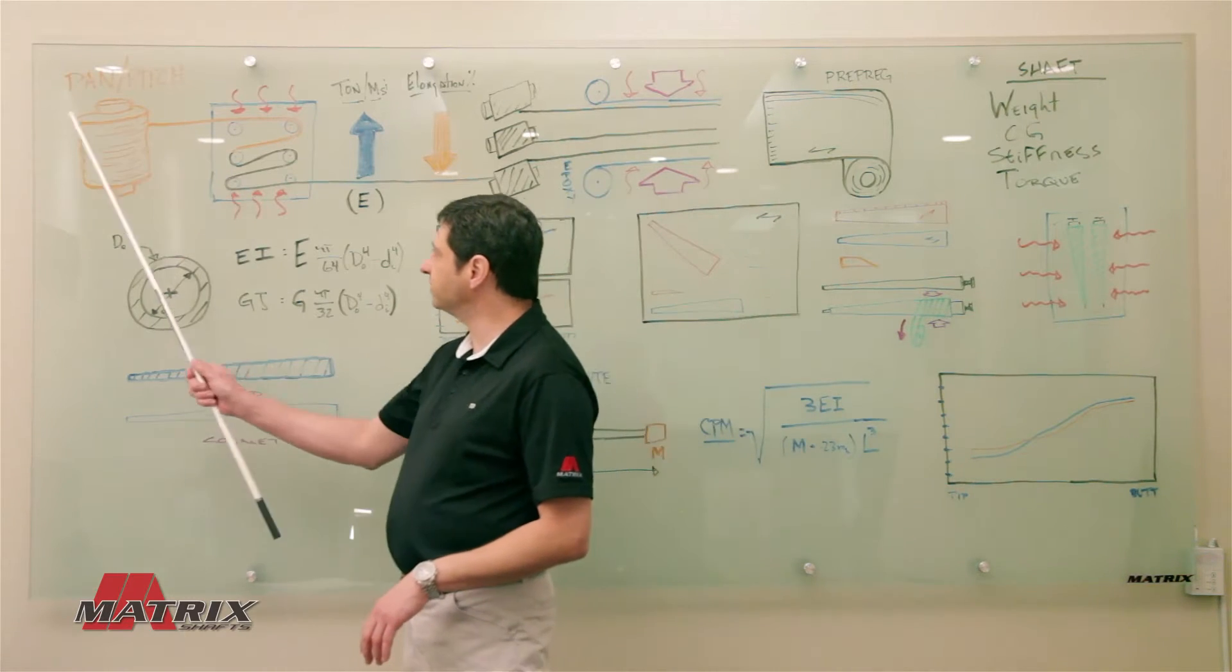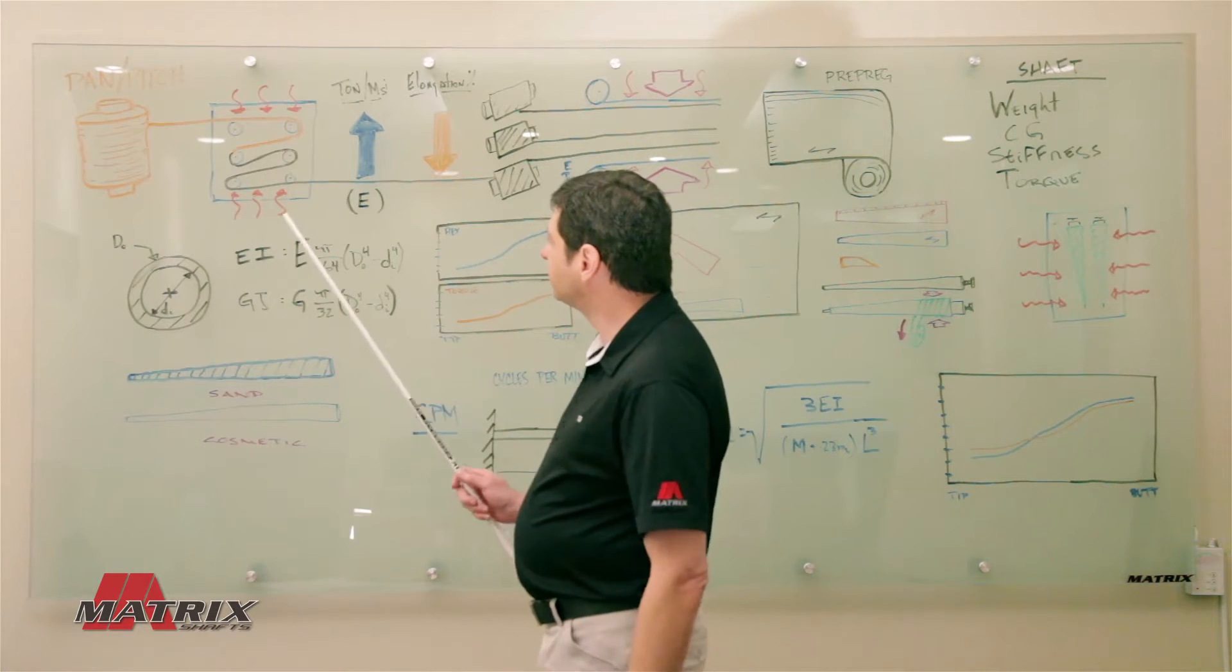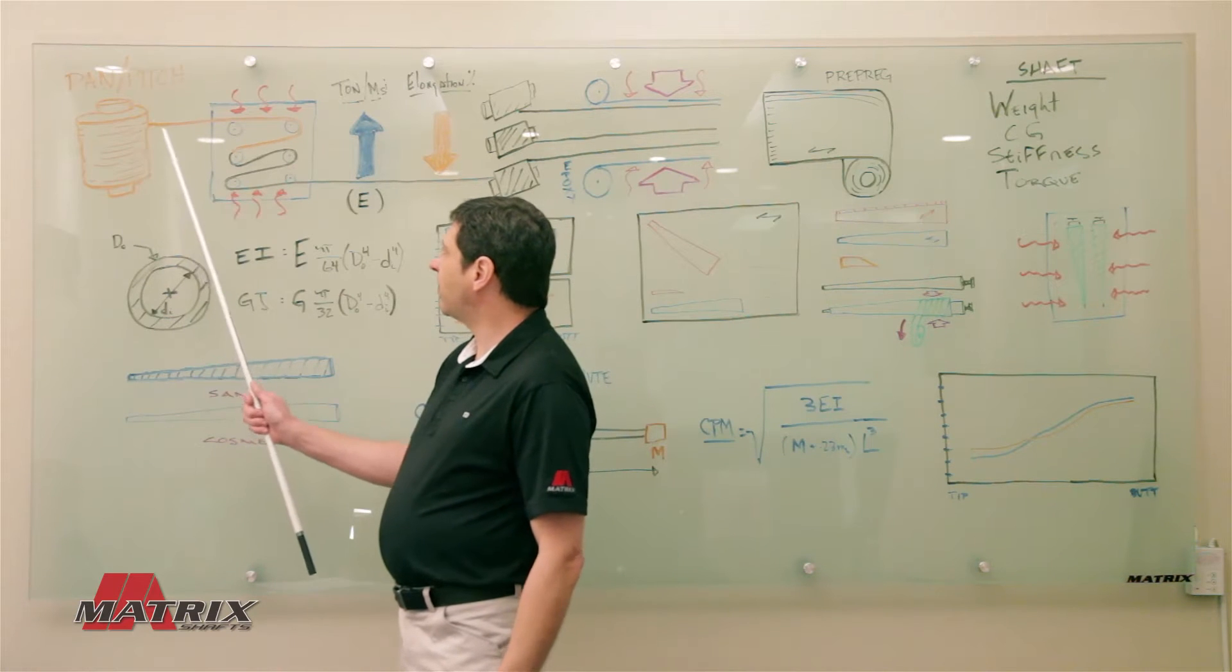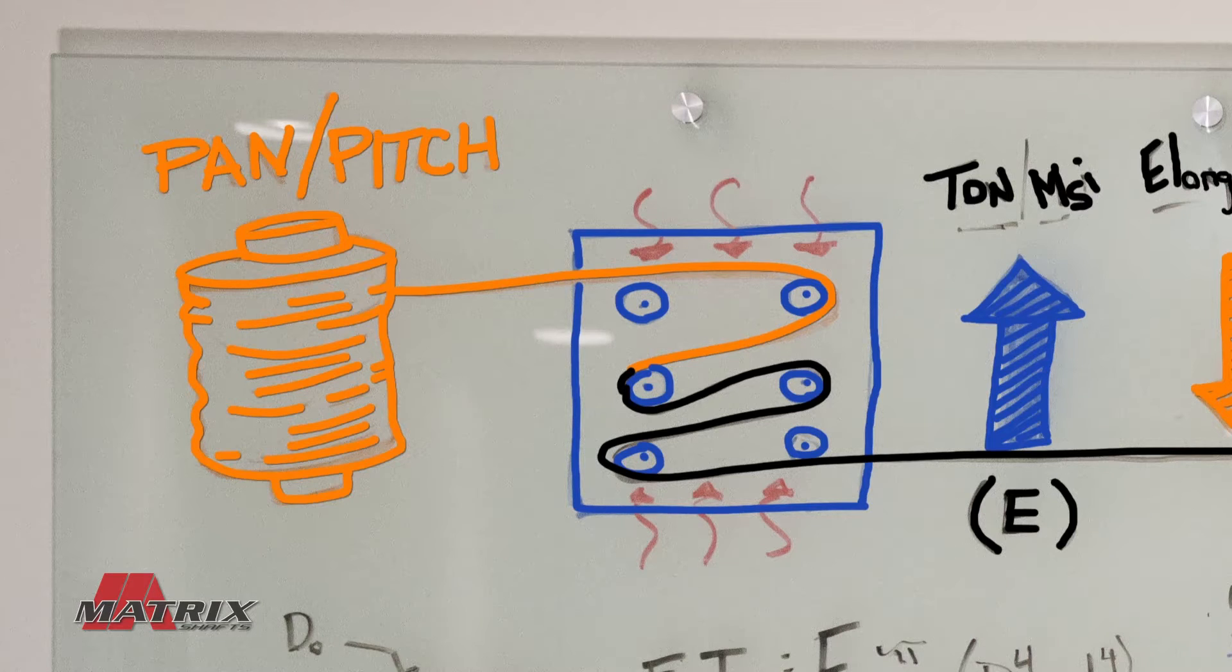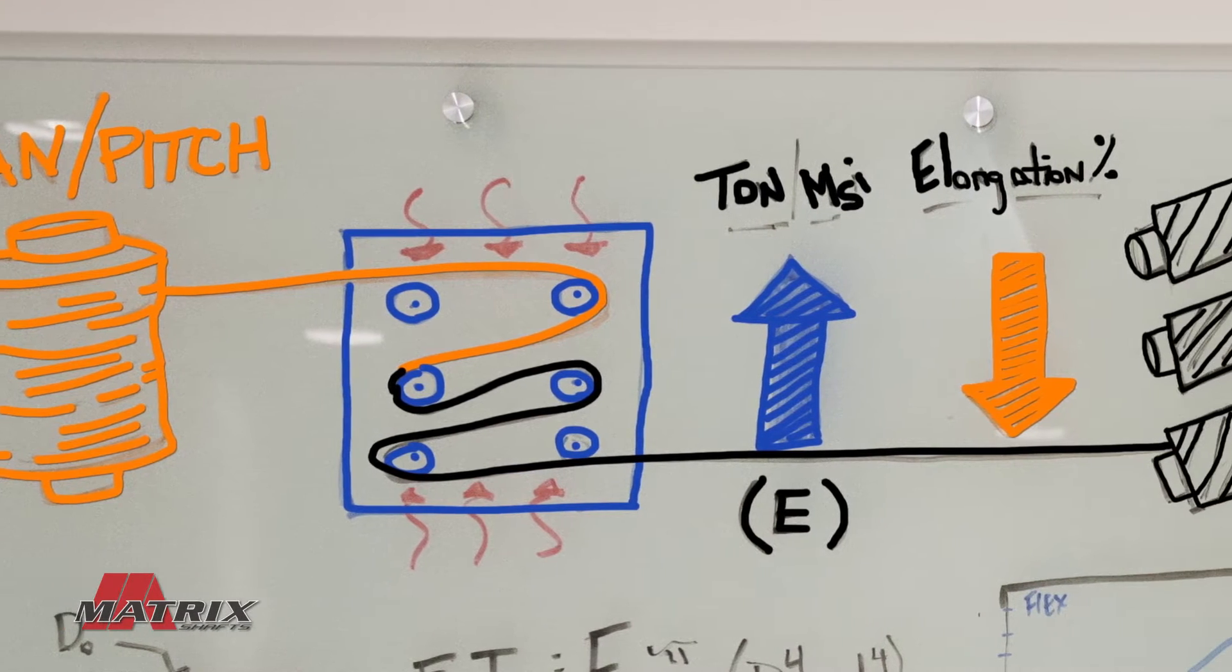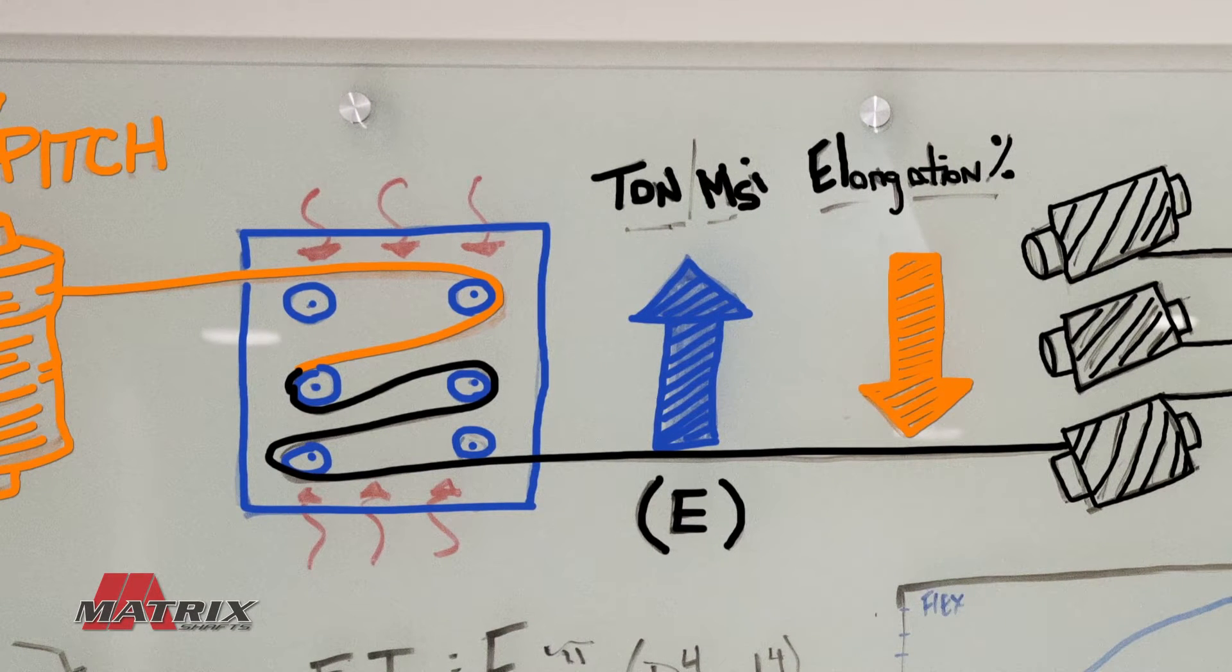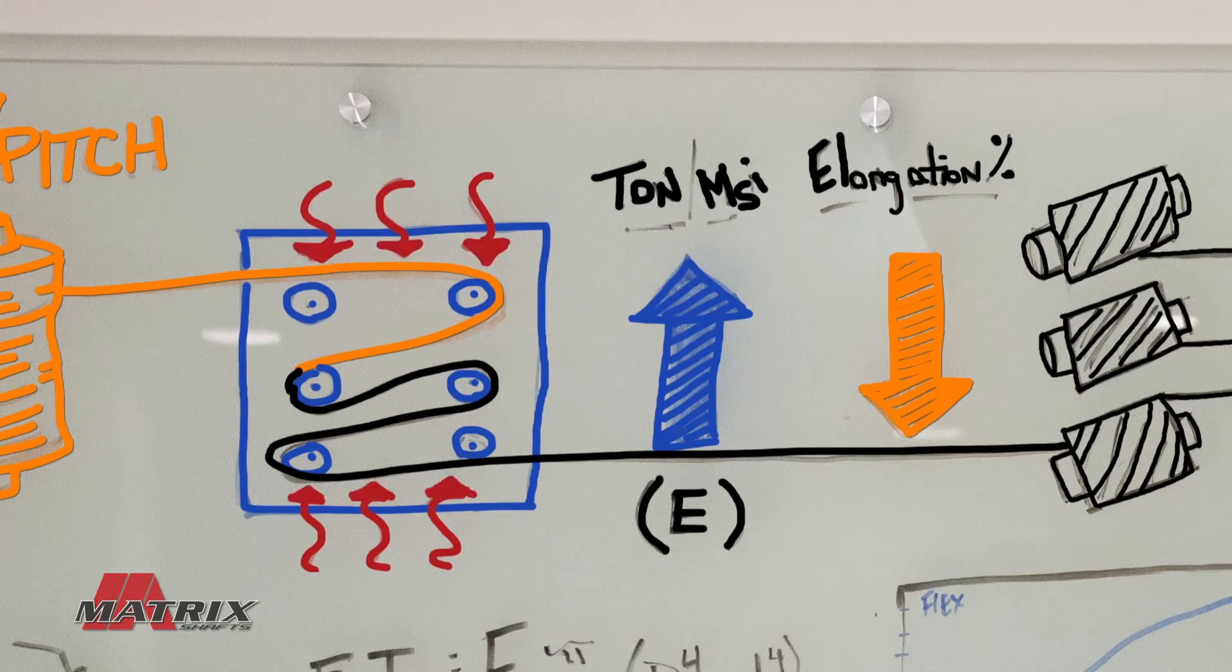Again, we're going to start with the raw materials that make a graphite shaft. Now, the carbon fiber starts out as either a PAN fiber or a pitch fiber, and that's called the precursor. We take that and run it through an oven. As it goes through the oven, you can vary the temperature and also vary the tension on the fiber itself.